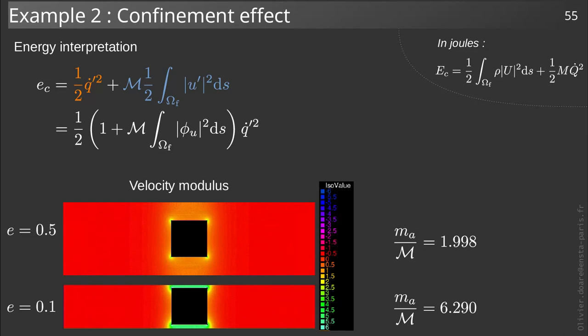We let appear the integral of phi_u squared on the fluid domain, which must necessarily be equal to the added mass coefficient. Making this calculation with freefem, we obtain the same coefficients as before. This allows us to propose an explanation for this large added mass coefficient. When we are dealing with strong confinements, a small movement of the solid would lead to a very large velocity of the fluid, and therefore a very large kinetic energy, contributing significantly to the total inertia of the system.